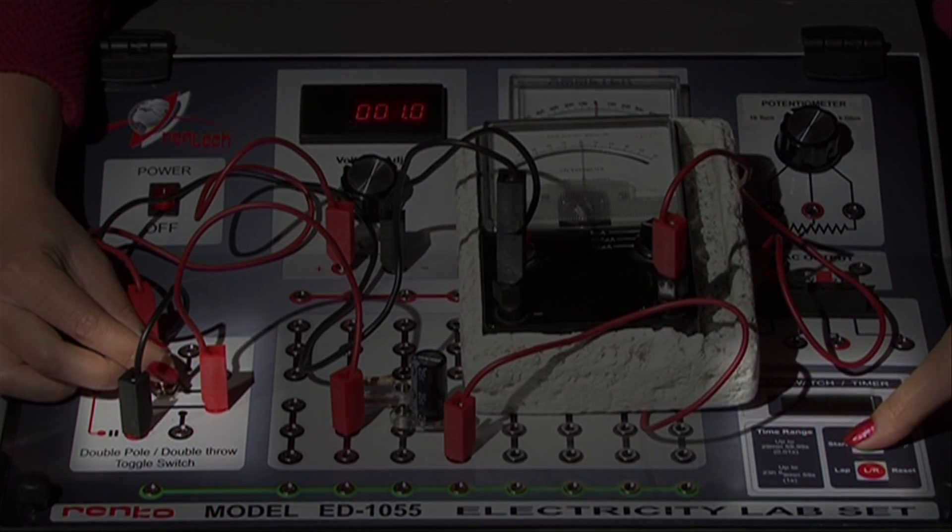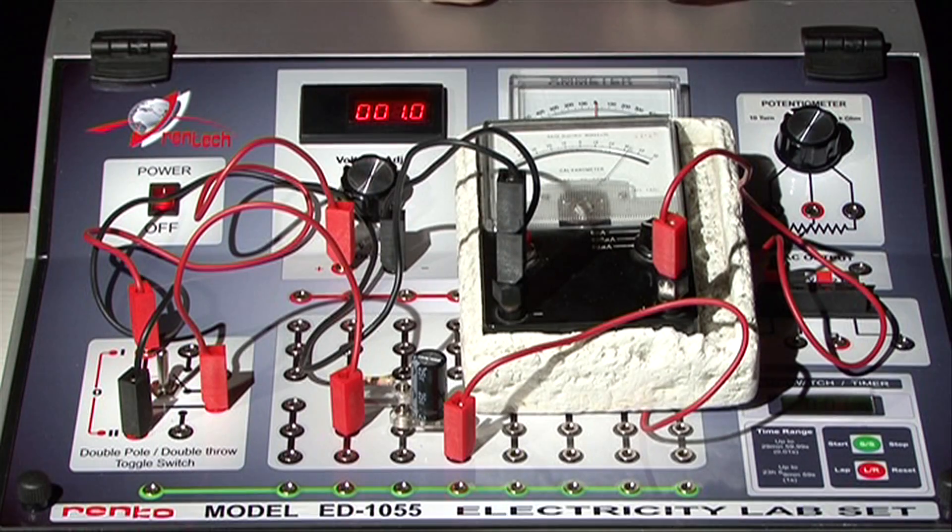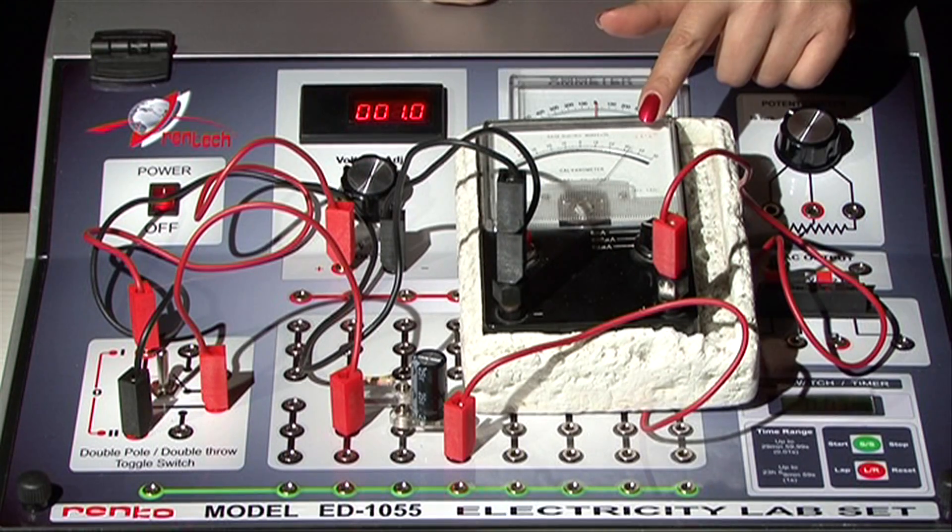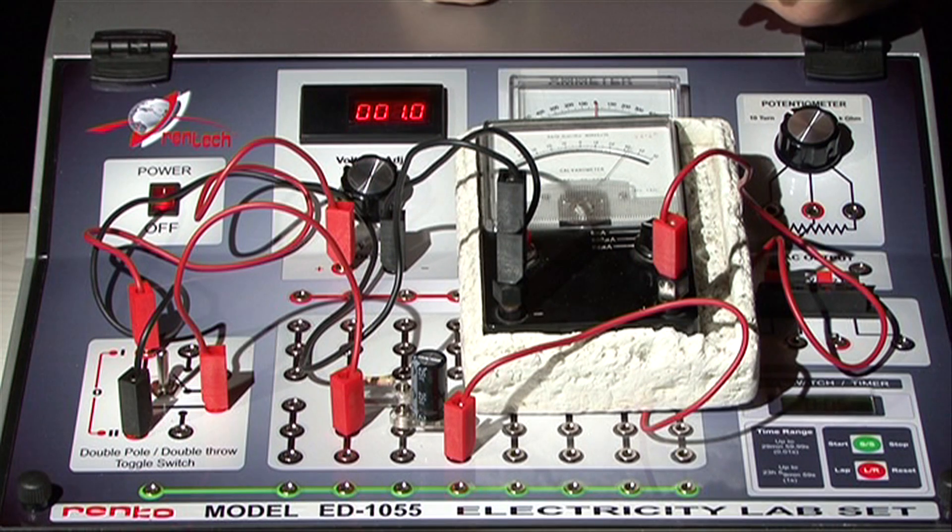Bring the switch to position 1 and simultaneously start the chronometer. The maximum value that the pointer touches is the value at t equals 0.